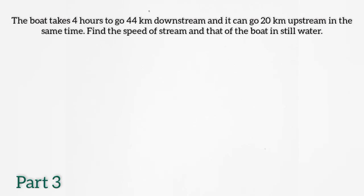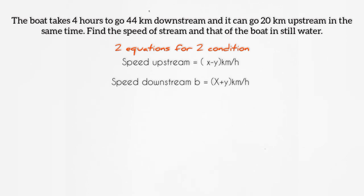Speed upstream and speed downstream are the two conditions given to us. So, speed upstream the equation will be x minus y kilometer per hour and speed downstream x plus y kilometer per hour.